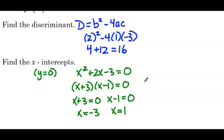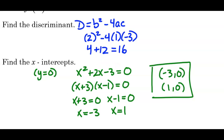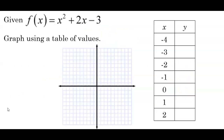Typically we write this as a solution set of {−3, 1}, but because we're looking for x-intercepts, which are individual points, we'll write (−3, 0) and (1, 0) as our solutions. These points are on the parabolic curve defined by x² + 2x − 3, so let's actually graph that parabola.